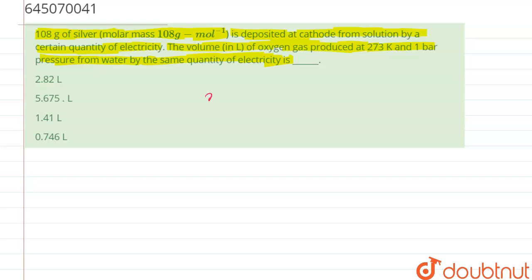First of all, we should know that N of Ag, that is moles of Ag deposited, is equal to 108 divided by 108, which is equal to 1 mole.